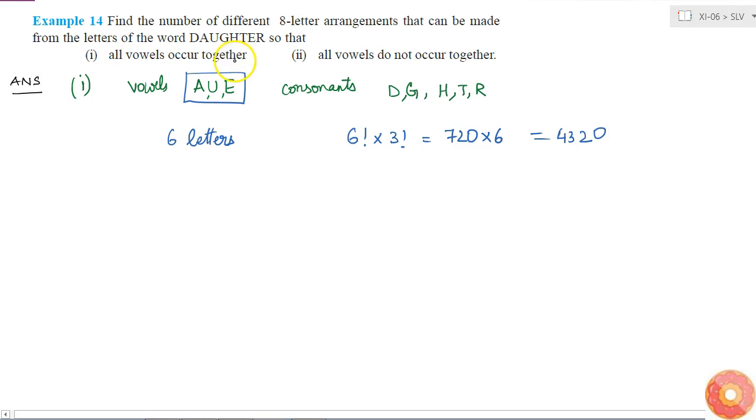Now what is the second one? The second one is all vowels do not occur together. That means they should not occur together, so it is the entirely opposite case of this. So what will I do? I know I can find the total number of 8 letter arrangements, that is 8 factorial.